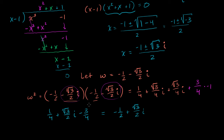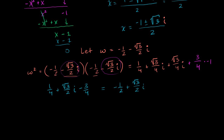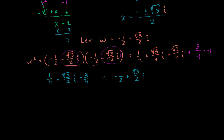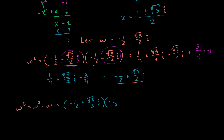That's interesting — when we squared omega, we got the other complex cube root of 1, specifically its conjugate. Omega squared equals negative 1 half plus square root of 3 over 2 i, while omega is negative 1 half minus square root of 3 over 2 i. Now let's compute omega to the third power, which is omega squared times omega.